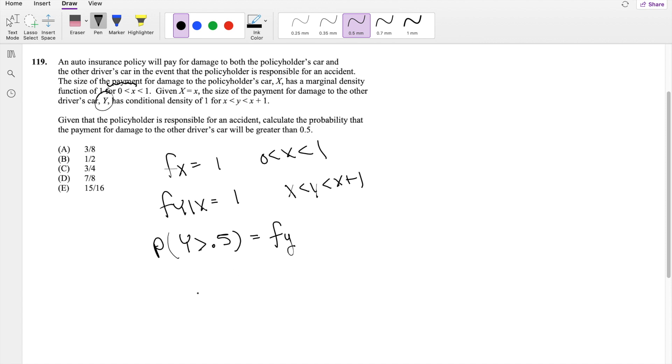So that means we first need to find the joint distribution, which we know by the formula here is going to be f of x, y divided by f of x. So then f of x, y, the joint distribution, must be equal to f of y given x times f of x.